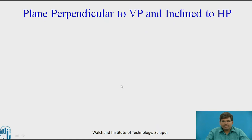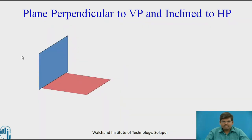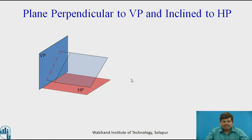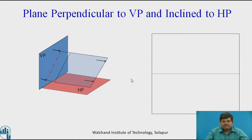Next: a plane perpendicular to VP and inclined to HP. These are the principal planes. The required plane is perpendicular to VP and inclined to HP. Projecting this in the front view — that is, on VP — we get an inclined line. In its projection on two dimensions, this is the XY line and front view. This kind of plane gives the sectional front view.